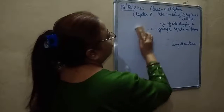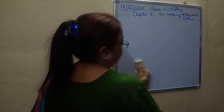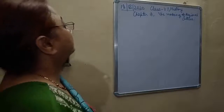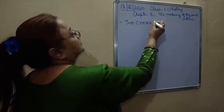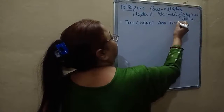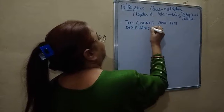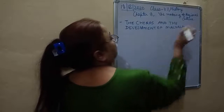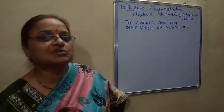This was an introduction to Chapter 9. We are studying culture, and the first topic is the Cheras and the development of Malayalam. Malayalam is a widely spoken language in South India - how did this language develop? This is what we need to understand in this topic.